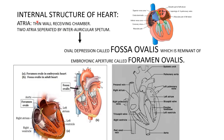Let's see the internal structure of the heart. The atria are thin-walled receiving chambers. The right atrium receives blood from the whole body and the left atrium receives blood from the lungs through the pulmonary vein. The two atria are separated by an interauricular septum. This septum contains an oval depression called the fossa ovalis, which is a remnant of the embryonic aperture called the foramen ovale. During intrauterine life, the right and left atria are connected through the foramen ovale, but after birth this oval gets covered and forms the fossa ovalis.